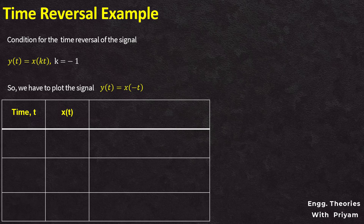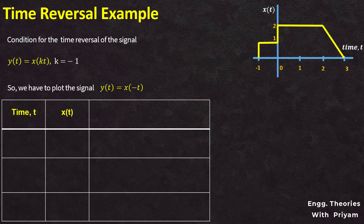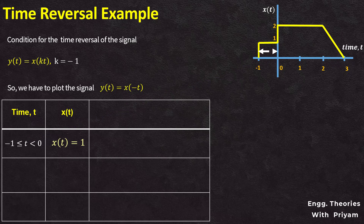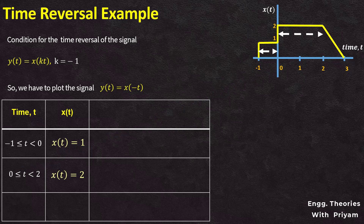Let's take a signal x(t). When t is greater than or equal to -1 and less than 0, the value of the signal x(t) equals 1. When t is greater than or equal to 0 and less than 2, the value of x(t) equals 2. When t equals 3, the value of x(t) equals 0.